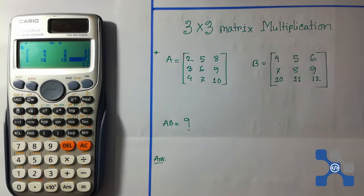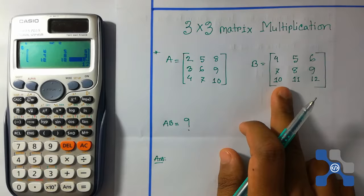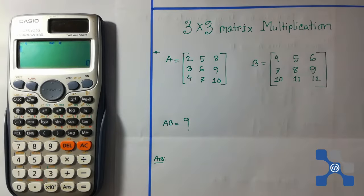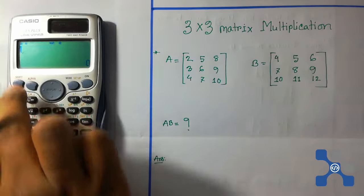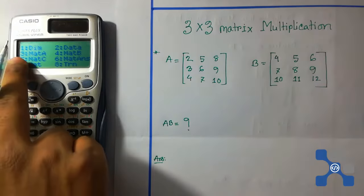OK, matrix B is loaded. Press AC button and now again press shift 4. Here we see the 3 for mat A, press 3.